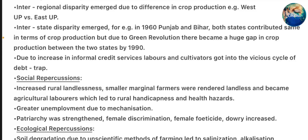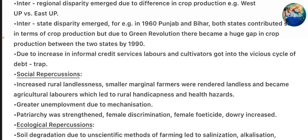Due to increase in informal credit services, labor and cultivators got into a vicious cycle of debt trap. Social repercussions: Increased rural landlessness - smaller and marginal farmers were rendered landless and became agricultural laborers, which led to rural hardship and health hazards. Greater unemployment due to mechanization. Patriarchy was strengthened; female discrimination, female foeticide, and dowry increased.